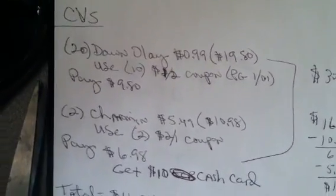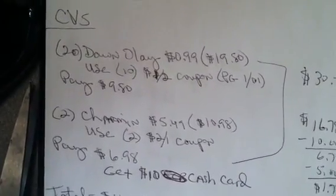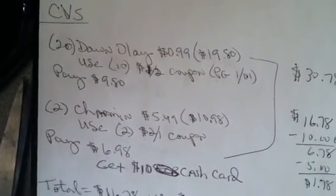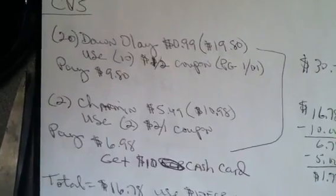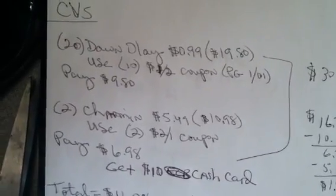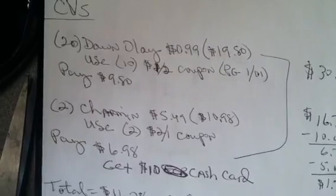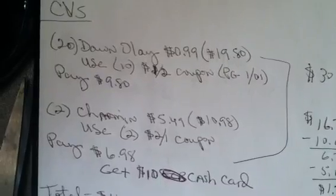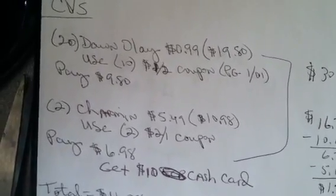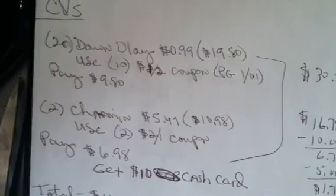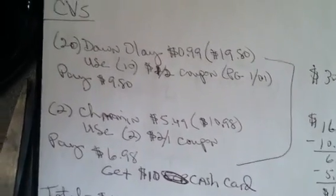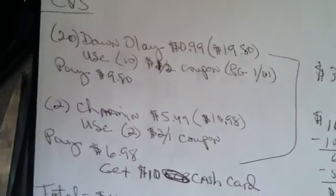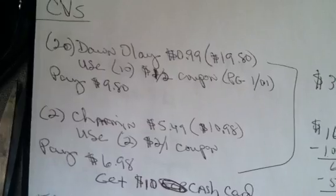Good morning, everyone. Welcome back to Pinching Pennies with Priscilla, and this is a CVS transaction that I've come up with to do the $10 CVS cash card. What I've come up with this morning is if you buy 20 of the Dawn, the Olay Dawn dish soap at 99 cents each, 20 of those are going to equal $19.80. You're going to use 10 of the dollar off of two coupons that came in the P&G insert for January 1st. And so after using those coupons, you'll pay only $9.80 off of that $19.80.